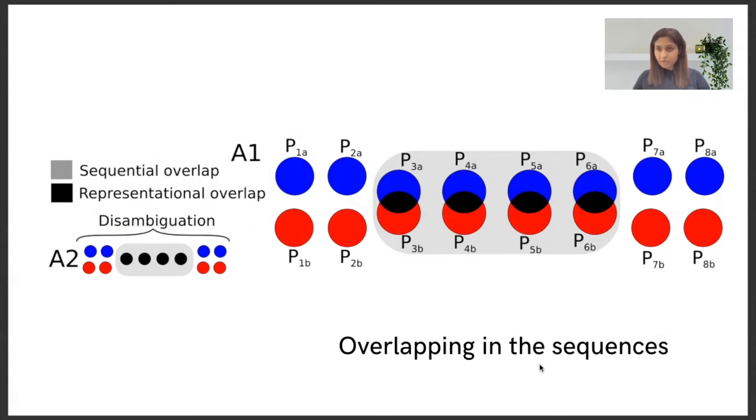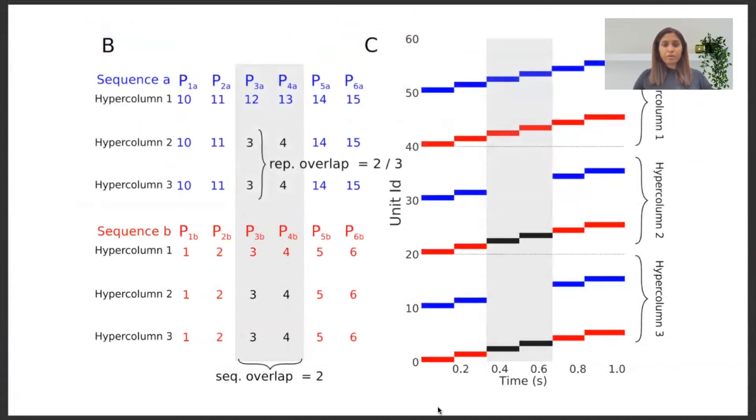And the second one, which measures the temporal aspect of overlap is the sequential overlap. The overall concept is seen in this figure where the two parameters, the representational overlap in black, shows how much overlap is happening between the two units. Sequential overlap, represented in gray, shows the number of units that's overlapping, the degree of disambiguation in this case. To be more specific, the percentage or ratio of hypercolumns that share the same units between two patterns is denoted as representational overlap. And we define sequential overlap as the number of patterns in two sequences that have some degree of similarity.